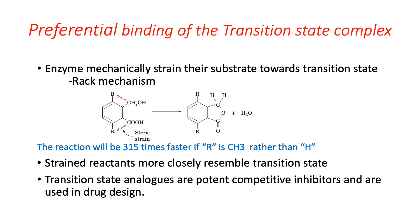Preferential binding of the transition state: this is one of the most important mechanisms of enzyme catalysis. The enzyme binds with greater affinity to the transition state than to the corresponding substrate or product. The concept is that enzymes mechanically strain their substrate toward the transition state geometry through binding sites where the undistorted substrate does not fit — this is known as the rack mechanism. For example, when the R group is CH3, the reaction takes place 315 times faster than when the R group is H, due to steric repulsion between CH3 and the reacting group.